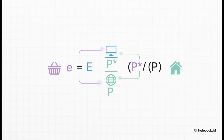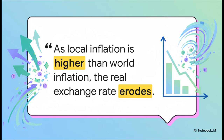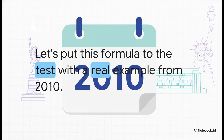Now let's put it all together. The real exchange rate, which we call little e, is found by taking our familiar nominal rate, big E, and adjusting it by the ratio of foreign prices to our home prices. This is the formula that uncovers the true purchasing power. And this brings us to the absolute key takeaway: the whole game changes because of inflation. When the prices in your own country are rising faster than prices in the rest of the world, the real value of that exchange just gets eaten away — it erodes. That's the theory. But let's make this really concrete with a real-world example.